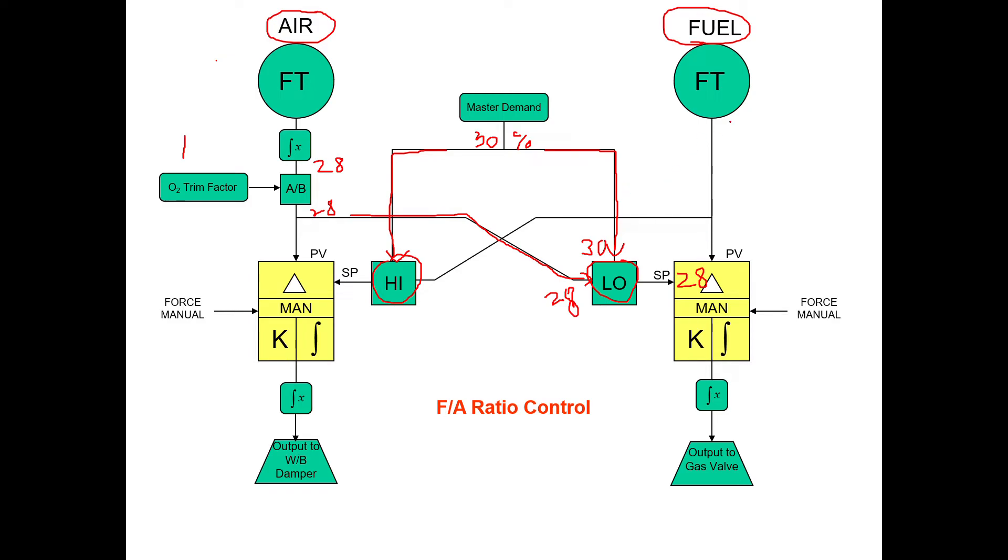Now let's say the fuel is outputting 26. 26 is now going to travel to the high select. 26 will come into this high select block. 30 is coming from the master to the high select. So the controls are going to select the higher of the two between master and fuel flow. So in this case 30 is higher than 26, so 30 becomes the airflow set point.